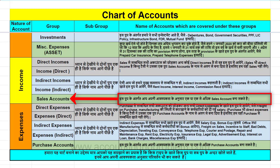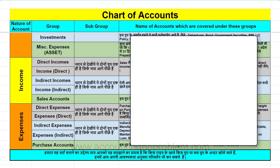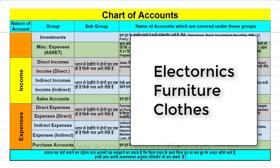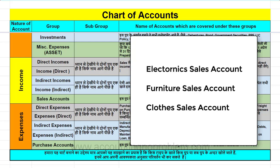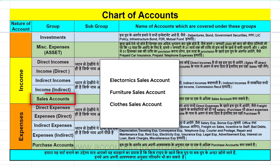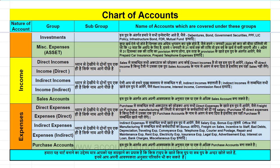यहाँ एक confusion हो सकता है कि sales account एक name है या sales accounts एक group का नाम है। दोनों सही हो सकते हैं। उदाहरण के लिए यदि हमारा बड़ा व्यापार है जिसमें electronics items, furniture और clothes हैं और हम सबको अलग-अलग देखना चाहते हैं, तो हमारे sales accounts के नाम इस प्रकार होंगे - Electronic sales account, Furniture sales account, Clothes sales account। लेकिन ये सभी sales accounts group के अंतर्गत आएंगे। यदि व्यापार छोटा है तो सिर्फ एक sales account बनाना होगा।